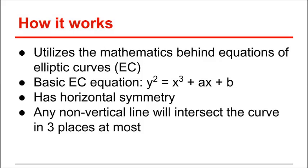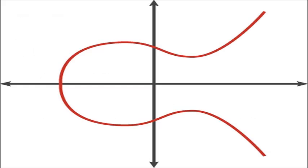ECC utilizes the math behind elliptic curves and works on two characteristics that these curves have. One is horizontal symmetry, which means that any point on the curve can be reflected over the x-axis and it will still be on the curve. The other characteristic is that any non-vertical line drawn on the curve will only intersect the curve a maximum of three times. Here we have a basic elliptic curve represented by the equation shown earlier.